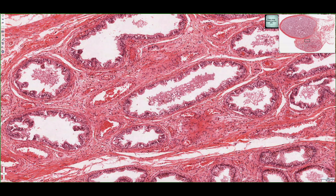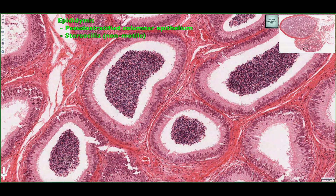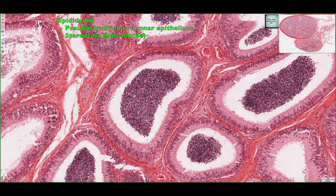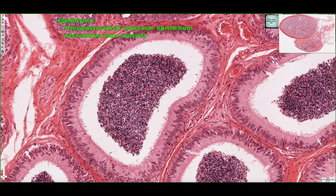Comparing the epithelial lining of the efferent ductules to the epididymis, we can see quite a different appearance. Here in the epididymis region, we have a pseudo-stratified columnar epithelium lining the epididymis all around, and then we can see little basal cells against a basement membrane. These are stem cells that help rejuvenate and replenish the pseudo-stratified columnar epithelium.